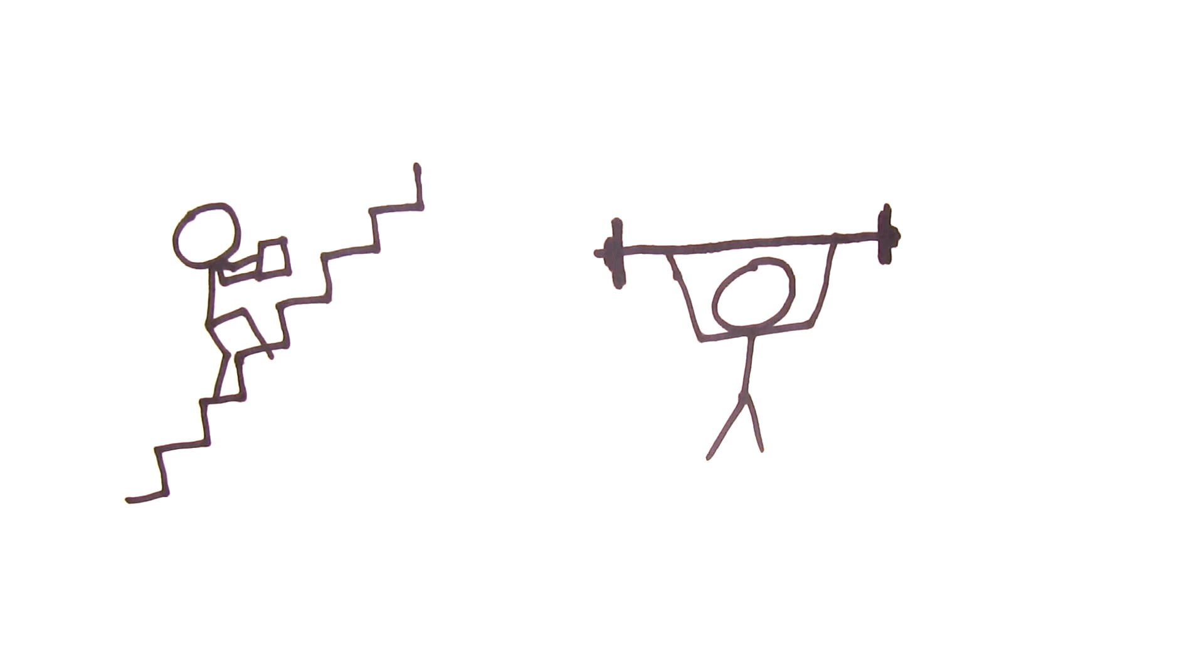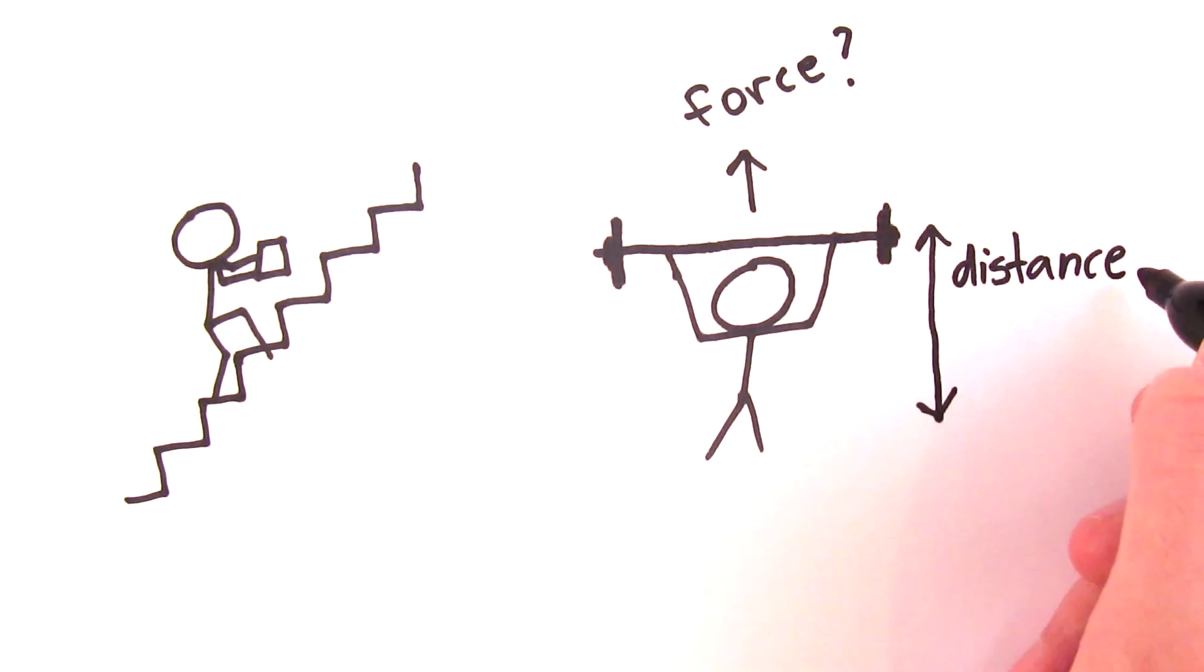You can calculate the amount of work being done by knowing the force applied and the distance the object has travelled. The work is measured in joules, the force in newtons and the distance in metres.